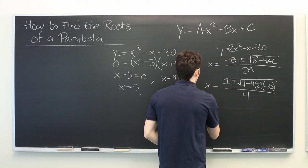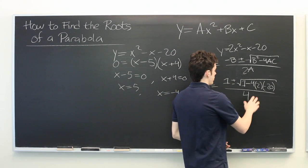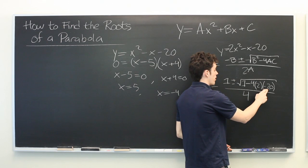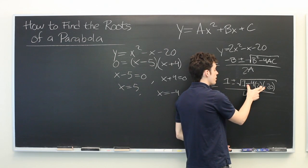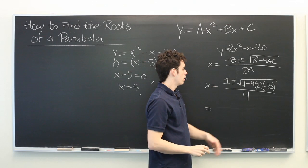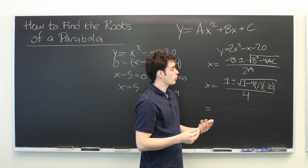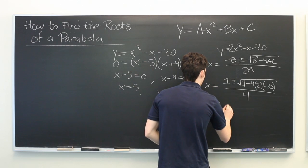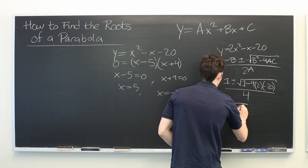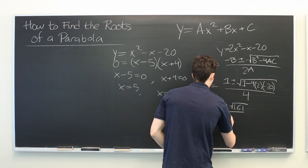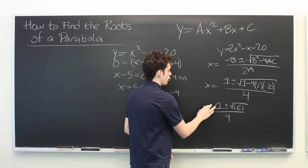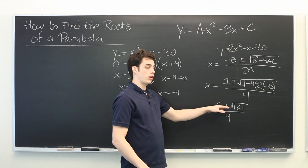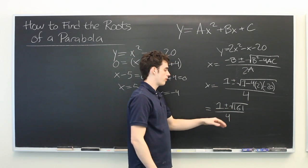And we can simplify this a little bit. We see that 4 times 2 is 8. 8 times 20 is 160. And we have two negative signs that cancel out. So we get 1 plus 160, or simply, 161. So the x coordinates of our roots will be 1 plus or minus the square root of 161 divided by 4.